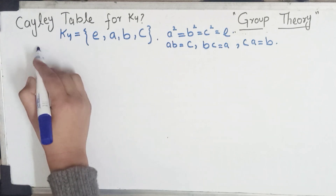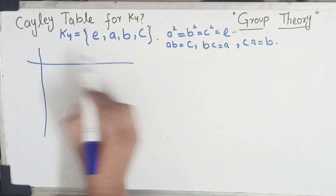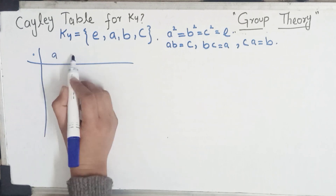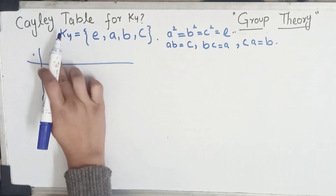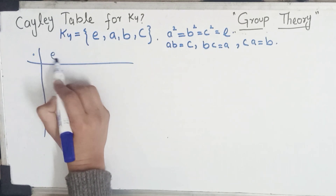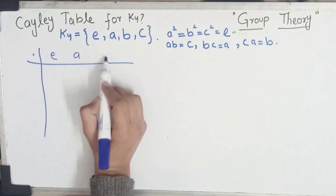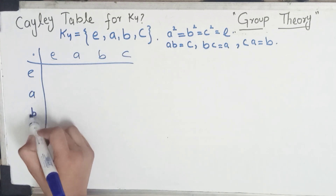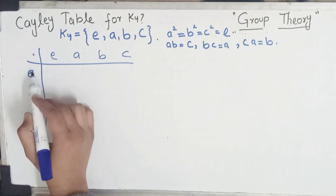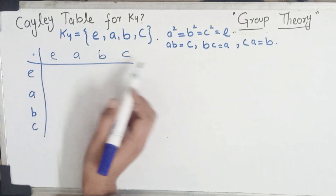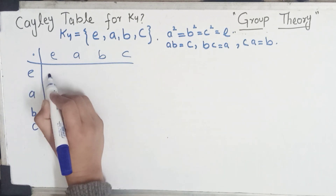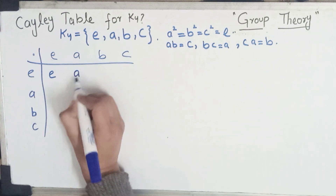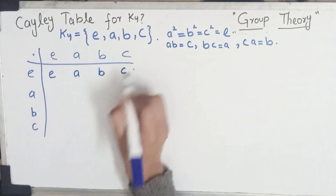Ab hum iska Cayley table construct kar lete hain, under multiplication check karte hain. Saare elements pehle row mein likhenge: e, a, b, c. Similarly column mein bhi e, a, b, c. Pehle hum identity ko saare elements se multiply karaenge, toh woh as it is aa jaenge: e, a, b, c. Phir e ko a se karaaya toh a, then b, then c.